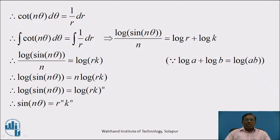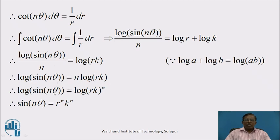Integrating both sides: ∫cot nθ dθ = ∫(1/r) dr, which gives log(sin nθ)/n = log r + log k, where k is a constant of integration. Using logarithm properties, the right-hand side becomes log(rk). Multiplying both sides by n: log(sin nθ) = n · log(rk) = log(rk)^n. Cancelling logarithm on both sides: sin nθ = r^n · k^n. This is the required family of polar curves which is orthogonal to the given family.